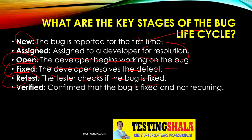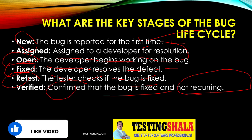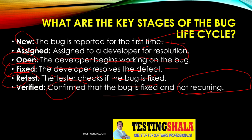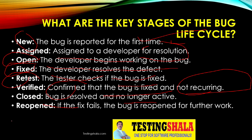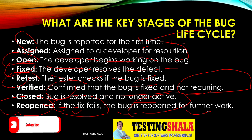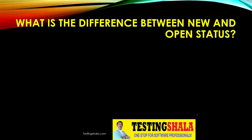The tester then checks if the bug is fixed — that is when retesting happens. In the verified stage, it is confirmed that the bug is fixed and not reoccurring. The closed status is when the bug is resolved and no longer active. There is also a reopen status: if the fix provided by the developer is failing, the bug is reopened for further work.